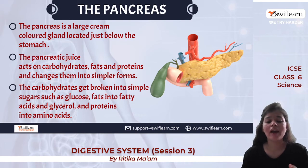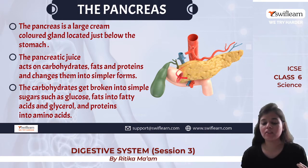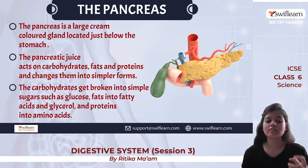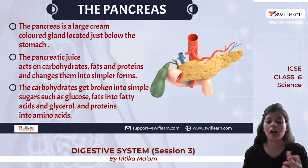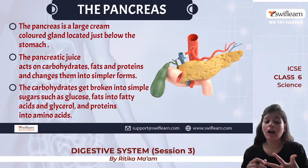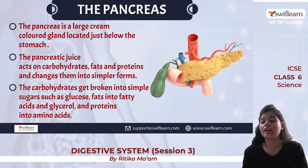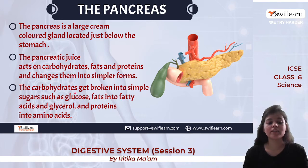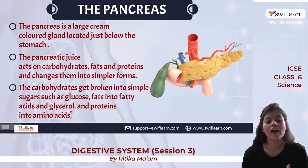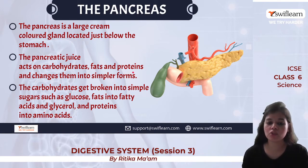The pancreas is a large, cream-colored gland located just below the stomach. It secretes pancreatic juices that act on carbohydrates, fats, and proteins, converting them into simpler forms. Carbohydrates are broken into simple sugars such as glucose, fats are converted to fatty acids and glycerol, and proteins are converted into amino acids.